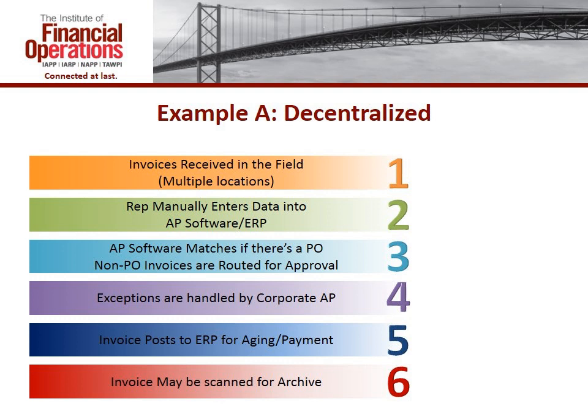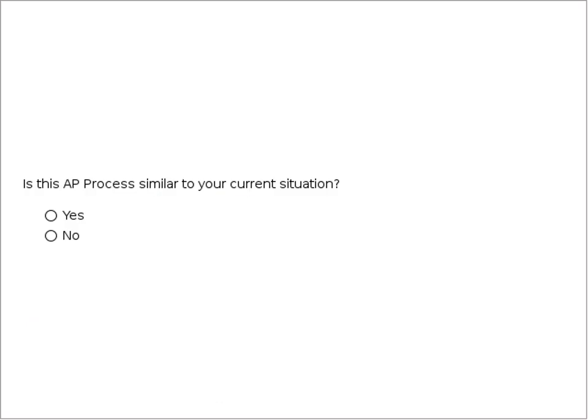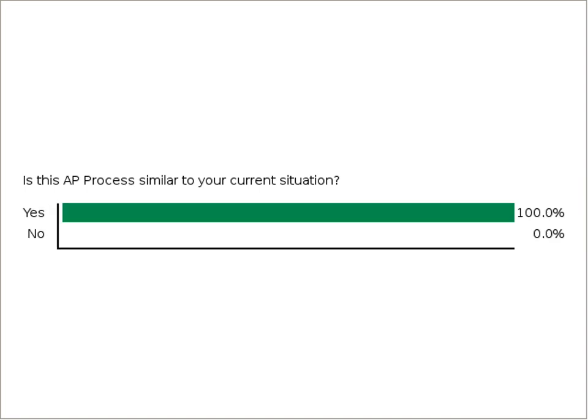Once those invoices are received, someone in the field manually enters data either into a third-party AP software or directly into the ERP. The software then matches if there's a PO; if it's a non-PO invoice, it's routed for approval — either automatically in some systems or manually in others. Exceptions are handled by corporate AP, and invoices eventually post to the ERP for aging or payment. Sometimes, but not always, the invoice can be scanned for archive purposes. Is this AP process similar to any of your current situations?